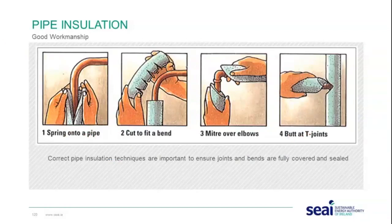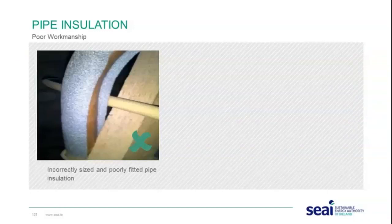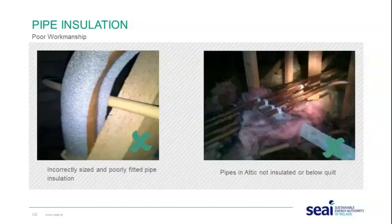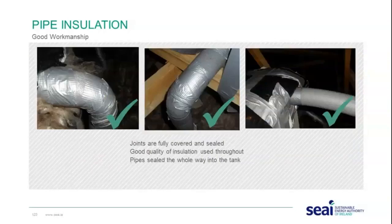Further poor workmanship examples include incorrectly sized pipe insulation and pipes in the attic that are not insulated or are left below the quilt. If pipes are running less than 300 millimetres from the ceiling, it is possible to insulate them by running the quilt insulation over the pipes. Good workmanship means joints are fully covered and sealed, quality insulation is used throughout, and pipes are sealed all the way into the tank.